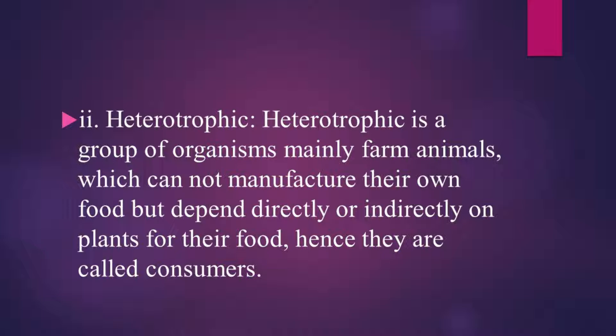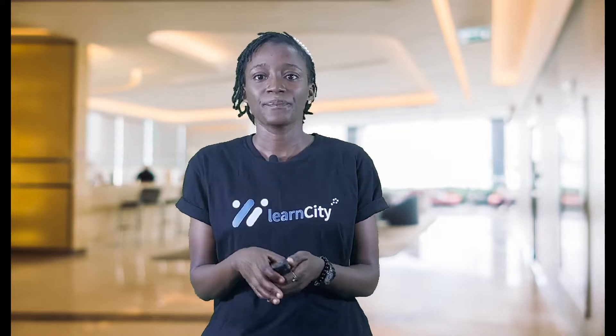The heterotrophic group of organisms — mainly farm animals — cannot manufacture their own food but depend directly on plants for their food. Farm animals that feed directly on green plants, which are the producers, are called herbivores or primary consumers, which include cattle, sheep, goats, and rabbits. Animals or organisms that feed on primary consumers are called carnivores or secondary consumers.